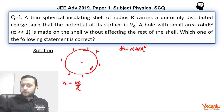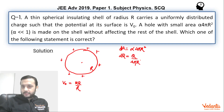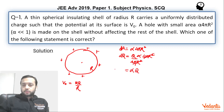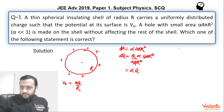Since charge is uniformly distributed on the surface of the shell, α fraction of the charge will also be removed. If dQ is the charge removed, then dQ = (Q / 4πR²) × dA = (Q / 4πR²) × α × 4πR² = αQ. So this amount of charge αQ has been removed, and we are left with the remaining shell with a tiny part missing.